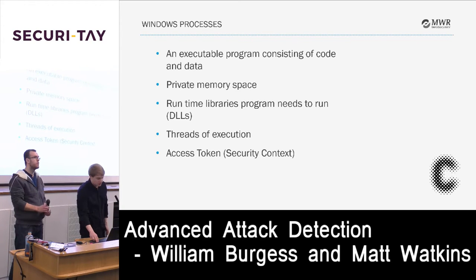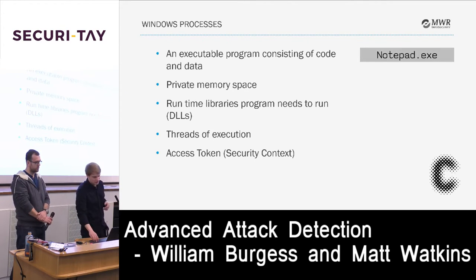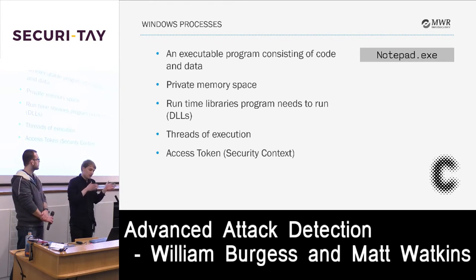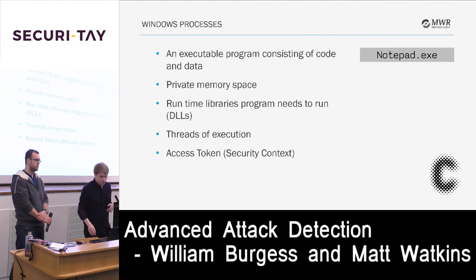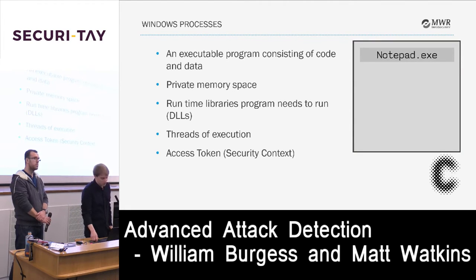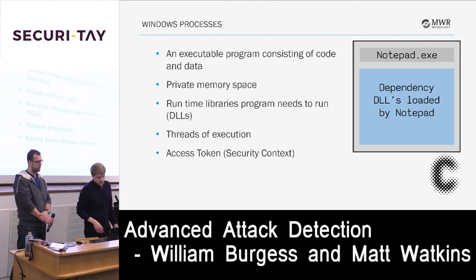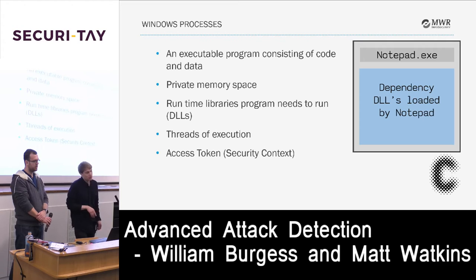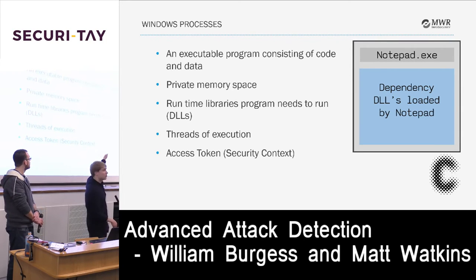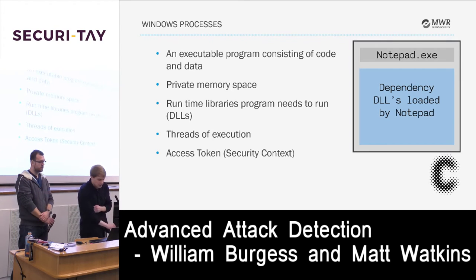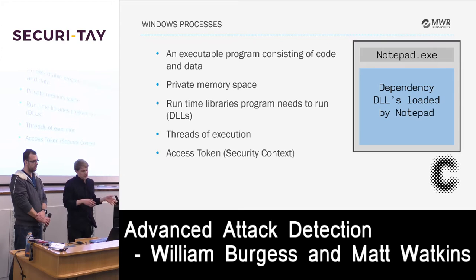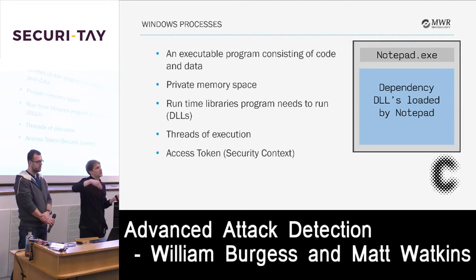Any user application you run in Windows will run as a Windows process, always consisting of at least five things. You'll have your executable program — the actual code, data, and resources. This is given its own private memory address space into which it maps any runtime libraries it needs, referred to in Windows as Dynamic Link Libraries or DLLs. Every process also has at least one thread of execution — for example, one thread starting at the main entry point of notepad.exe. Lastly, every process has an access token or security context that dictates its permissions and privileges.